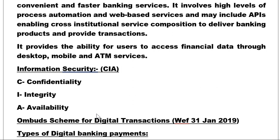Availability means that when data is asked for or retrieved, it must be available at that particular time and place. To summarize, the main components of information security are CIA: C stands for Confidentiality, I stands for Integrity, and A stands for Availability.